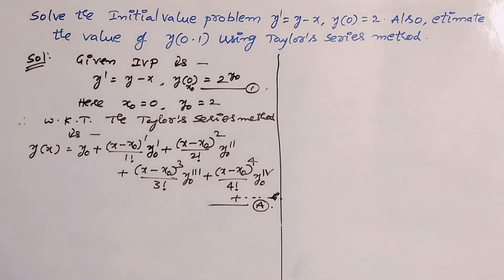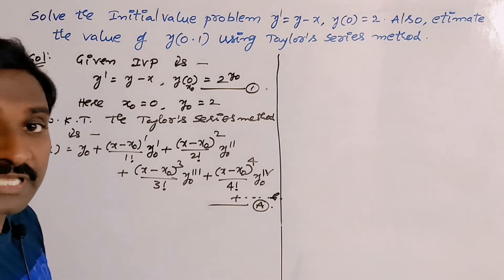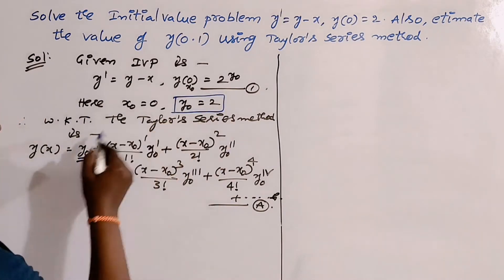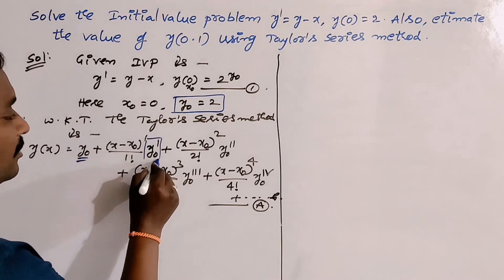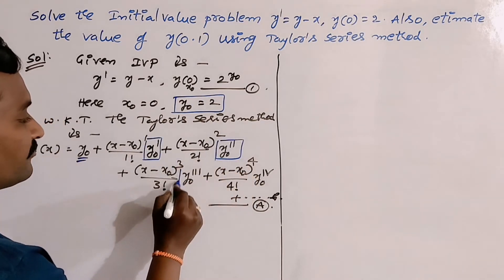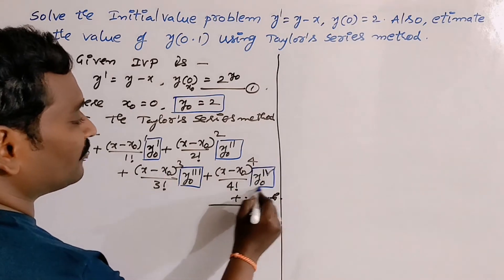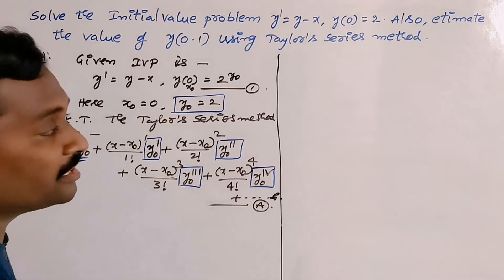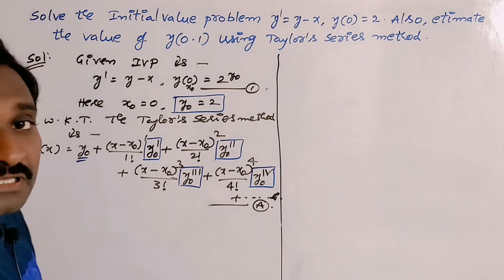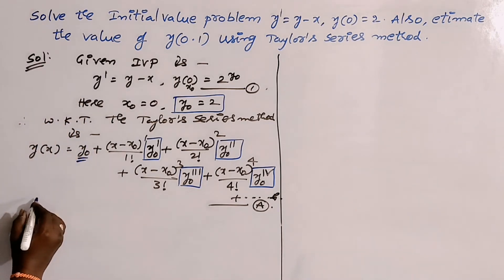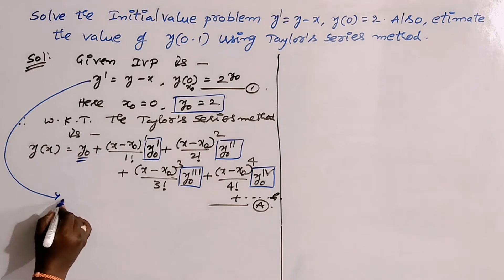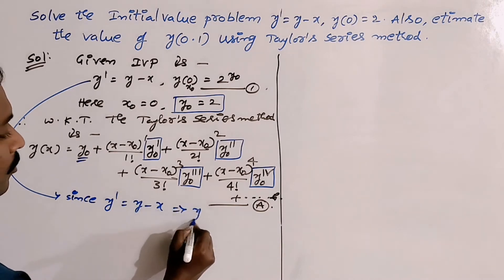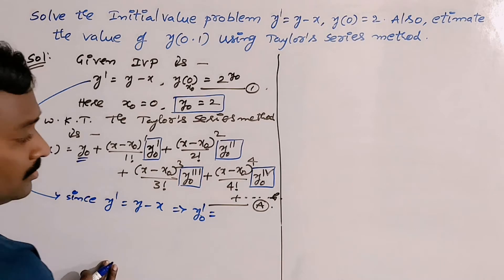It is enough to find the unknown derivatives involved in the Taylor series. y₀ is already provided as the initial condition. We need to find y₀', y₀'', y₀''', and the fourth derivative of y at x₀. At least three or four derivatives are needed. From the given problem, since y' = y - x, we can write y₀'.